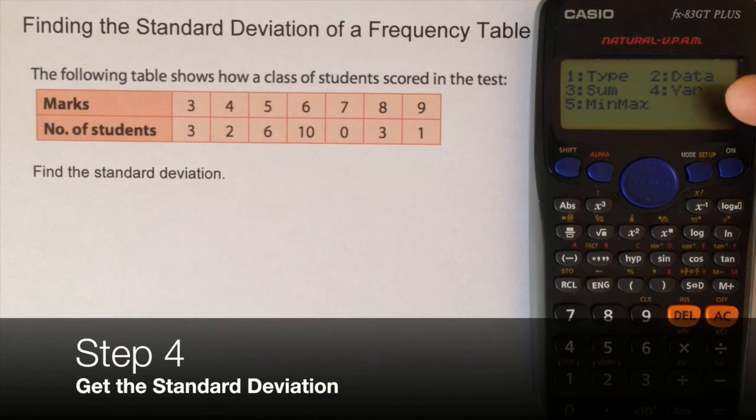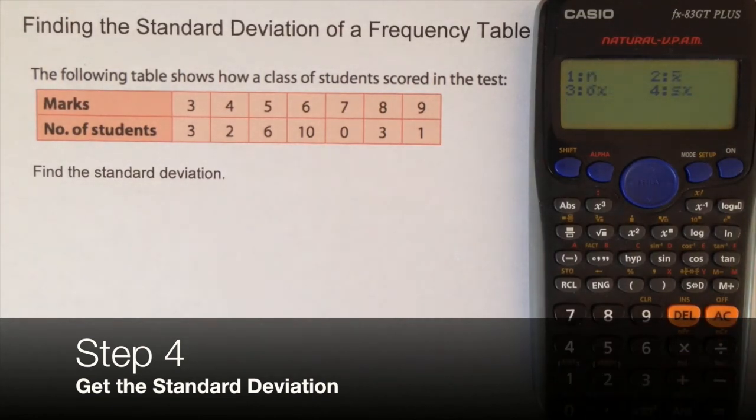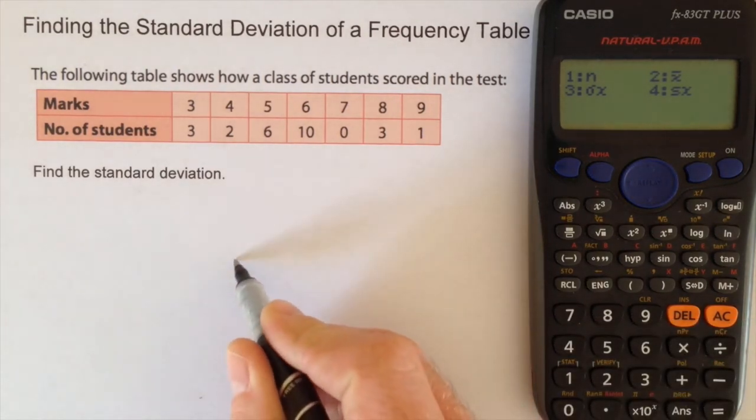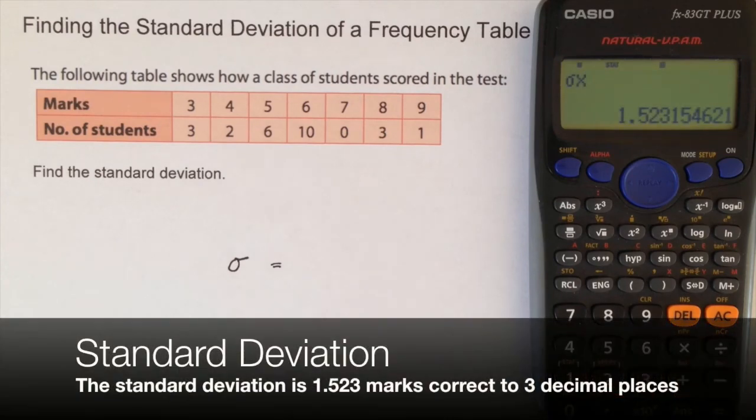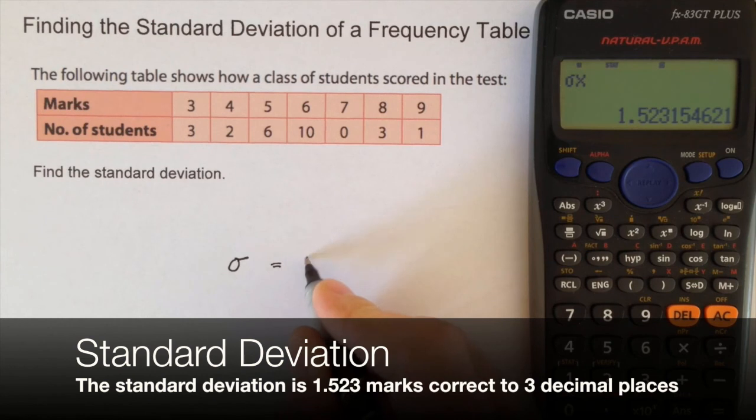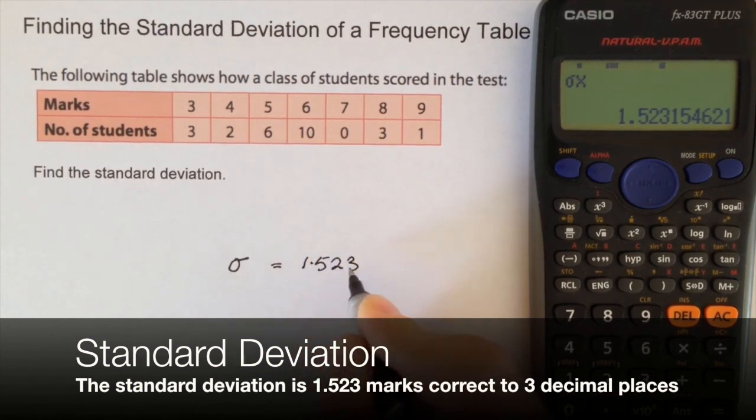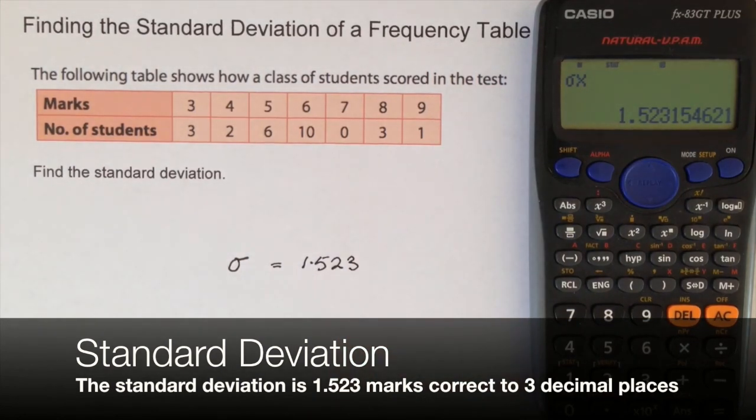Standard deviation is a variance question. So option 4 is to do with variance. And the symbol for standard deviation is this symbol here. It's the Greek letter sigma. So I choose option 3 and write equals. And it tells me the standard deviation for this table is 1.523 to 3 decimal places.